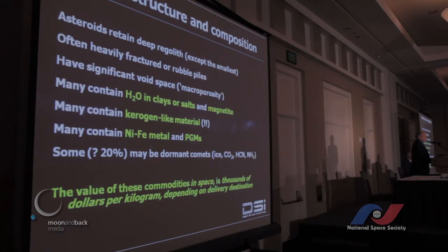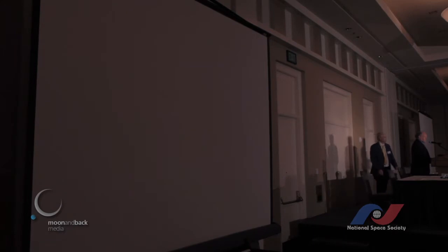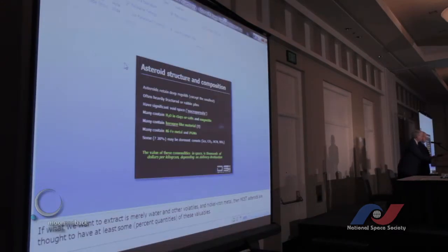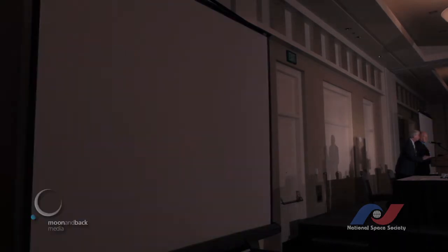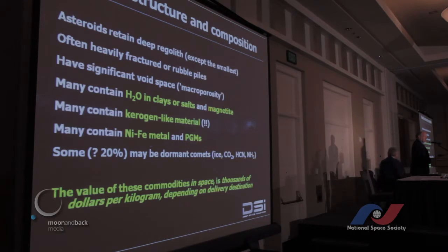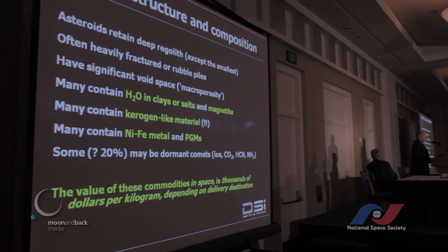The pictures we have so far show heavily fractured or rubble piles. We have indications of significant porosity. From meteorite data - ground truth from meteorites - we have knowledge that many of these objects have water in clays or in salts. Many of these objects have magnetite in them.